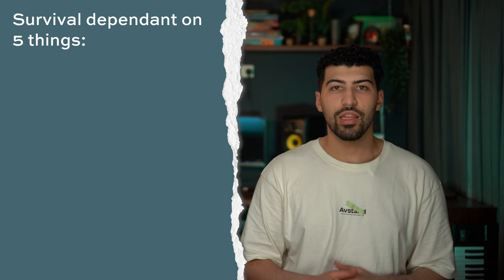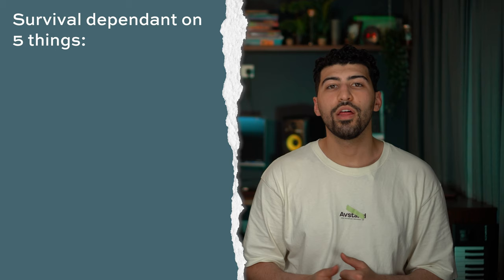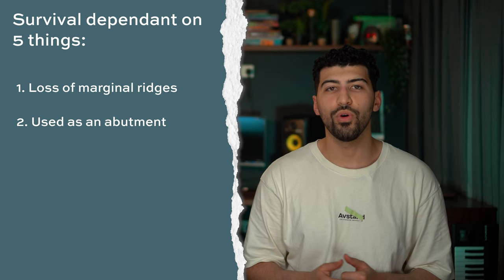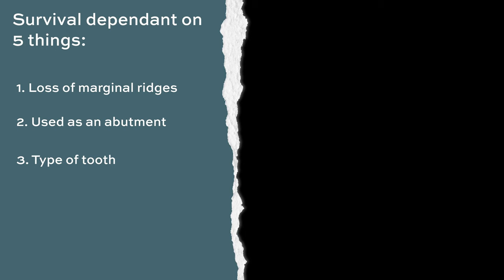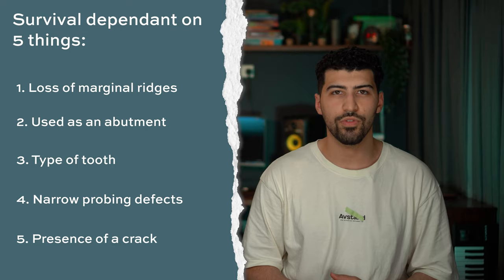The survival of a tooth is reduced by five things. One, the loss of both marginal ridges. Two, if the tooth is used as an abutment tooth for a fixed or removable prosthesis — this should not be done because we'll end up compromising the root-treated tooth due to its inability to cope with as much load as a sound tooth. Three, if it's a molar. Four, narrow deep probing defects, which indicate the presence of a crack or a fracture. And finally, five, if there is in fact a crack. The more of these you have, the worse the prognosis for the tooth.